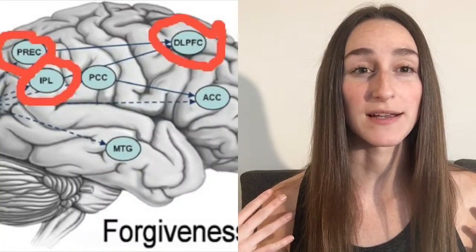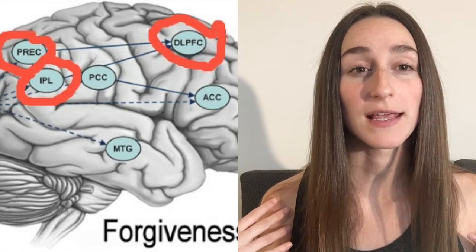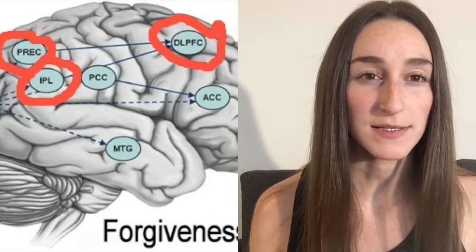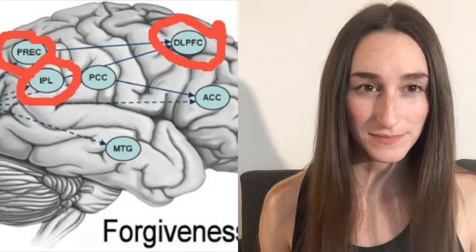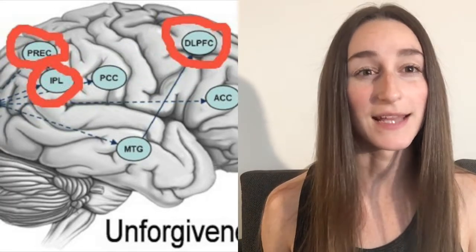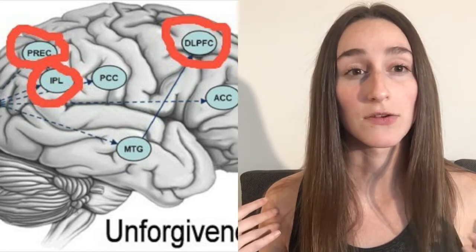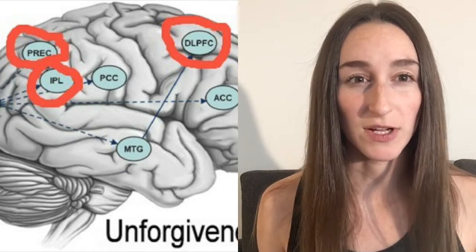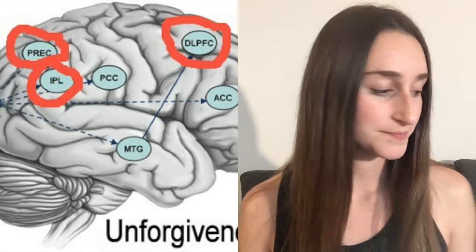This is what the brain connectivity looked like in the group that forgave their boss, and this is the connectivity in the group that didn't forgive their boss. The blue lines indicate connectivity — meaning these areas are lighting up at the same time, working together, and are indeed connected.